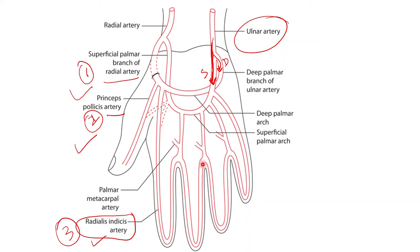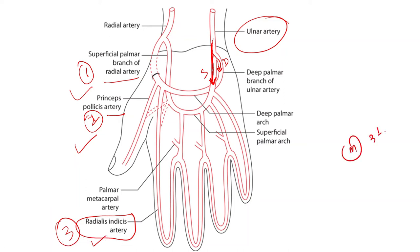The first palmar digital artery arising from the arch runs along the ulnar border of the little finger. The remaining three palmar digital branches join with the palmar metacarpal artery and supply the adjacent sides of the fingers at the level of the web. The radial side of the index finger is devoid of vascular supply from the superficial palmar arch. That is why we say the superficial palmar arch supplies the medial three and a half fingers. The lateral side of the index finger is supplied by a branch of the deep palmar arch.